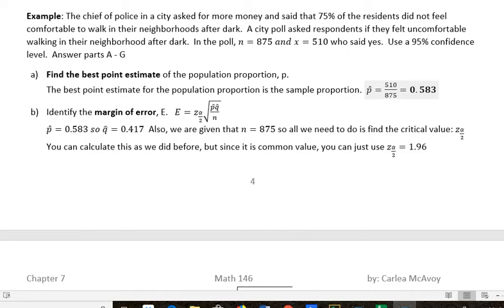The chief of police in a city asked for more money and said that 75% of the residents did not feel comfortable walking in their neighborhoods after dark. A city poll asked respondents if they felt uncomfortable walking in their neighborhood after dark. In the poll, n equals 875, that's the number of people that responded, and of those, 510 said yes.